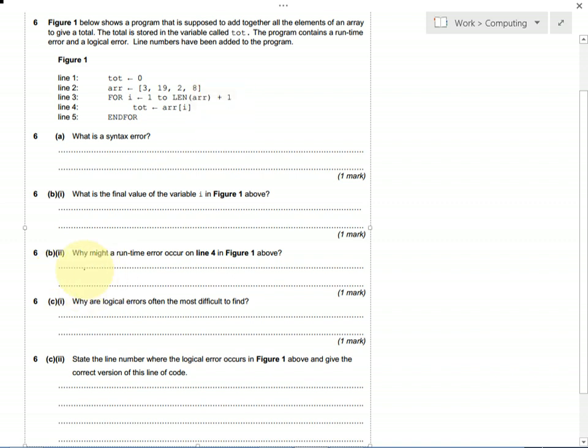Okay, so 6B part 2, why might a runtime error occur on line 4? So line 4 here, this line is saying the variable tot should be a value from our array at position i. So it'll start off being absolutely fine because if i is 1, then tot will be 3.